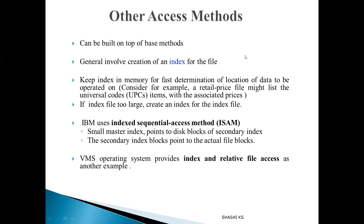Apart from sequential and direct access, there is also the indexed access method. In indexed access, an index — like the index of a book — contains pointers to the various blocks. For example, in a retail price file storing product codes and prices, the index may contain the product code of the first record for each block. If the file system contains too many files and the index becomes too large, it can be split into a master index residing in memory and a secondary index in secondary storage pointing to actual file blocks.